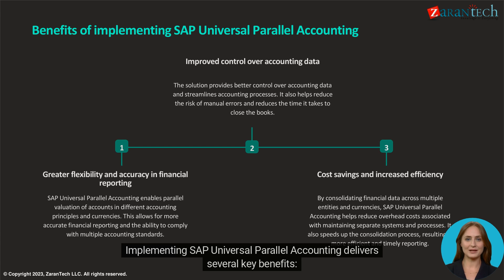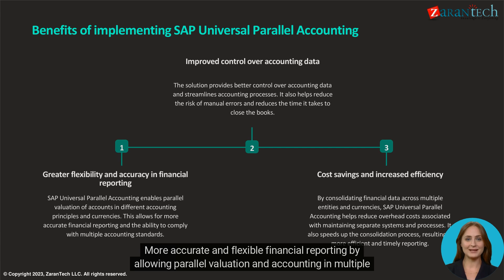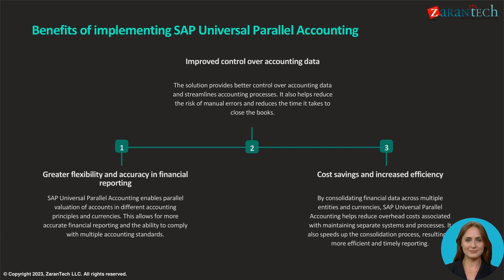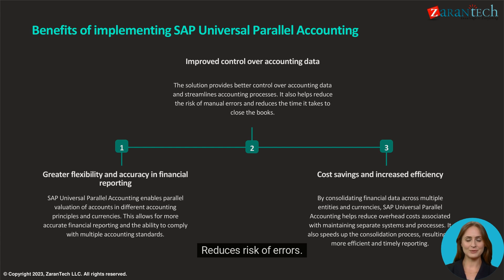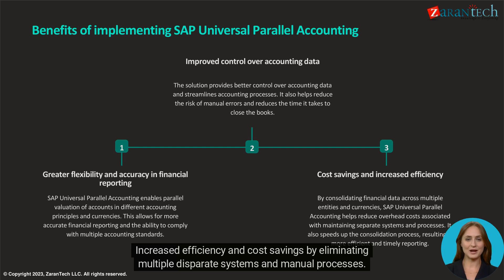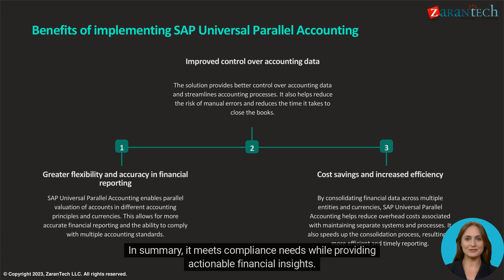Implementing SAP Universal Parallel Accounting delivers several key benefits. More accurate and flexible financial reporting by allowing parallel valuation and accounting in multiple standards and currencies. Greater control and transparency over accounting data through centralized management. Reduces risk of errors. Increased efficiency and cost savings by eliminating multiple disparate systems and manual processes. Accelerates consolidation. In summary, it meets compliance needs while providing actionable financial insights.